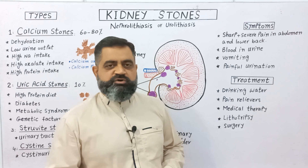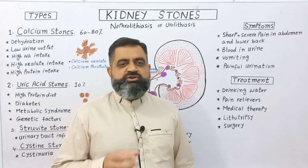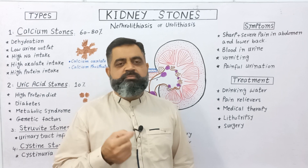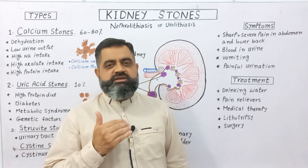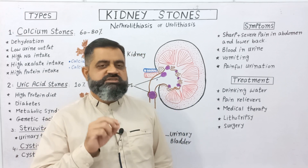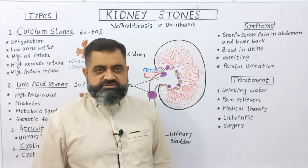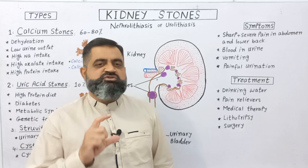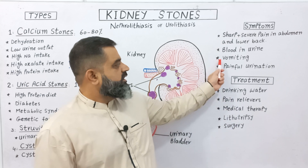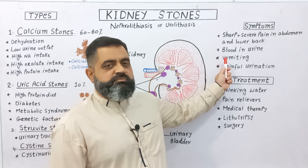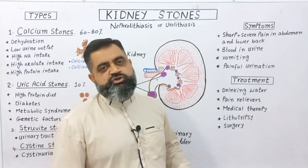Sharp and severe pain in the abdomen which moves towards the lower back is the most important symptom of kidney stones. Sometimes there is blood in the urine — the urine has a different color which is brown or pink, indicating movement of stones inside the kidney causing infection or bleeding, which changes the color of the urine. Nausea, vomiting, and painful urination are also major symptoms of kidney stones.